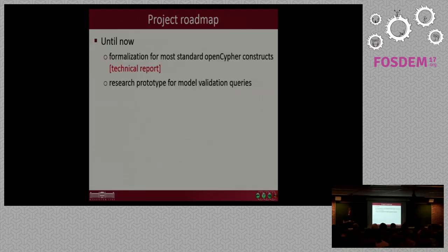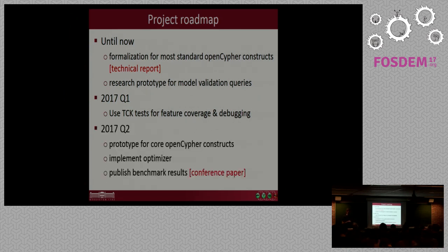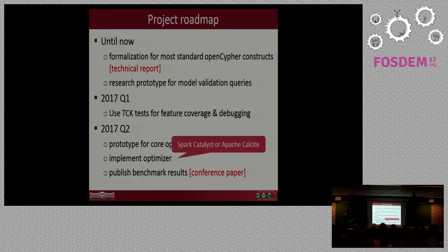So until now we've formalized most of the standard OpenCypher language and gathered our findings to a technical report and implemented a research prototype for the railway model validation queries. In this quarter we plan to use the TCK tests which are provided with OpenCypher. This will allow us to increase the coverage of our mapping and probably will also reveal a lot of bugs in our parser and in our query engine. And once we are done with that, we will implement a more sophisticated optimizer using technologies from the Apache stack, probably Spark Catalyst or the Calcite system. And we plan to publish our benchmark results in a top tier academic conference.